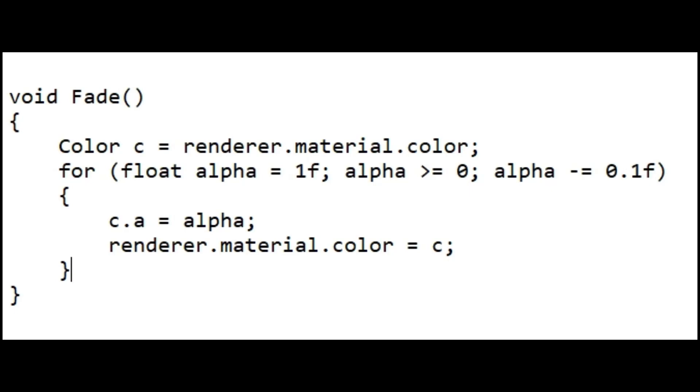However, this example method executes in its entirety within a single frame update. The intermediate values are never displayed, and the object disappears instantly.